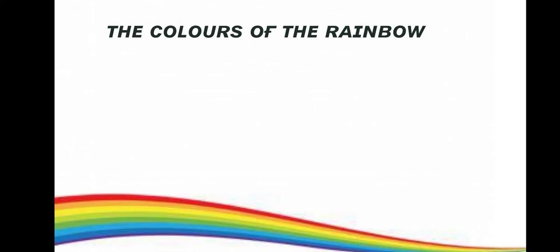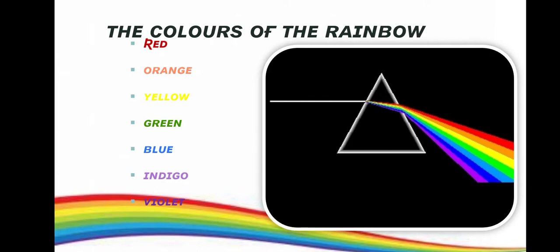The colors of the rainbow are: Red, Orange, Yellow, Green, Blue, Indigo, Violet.